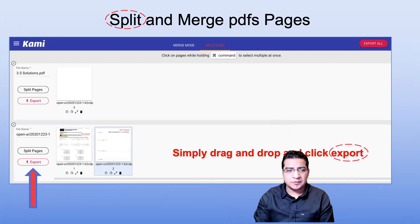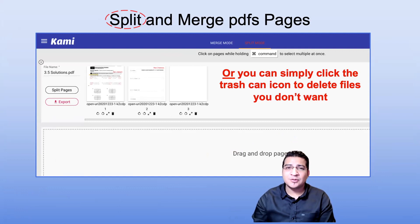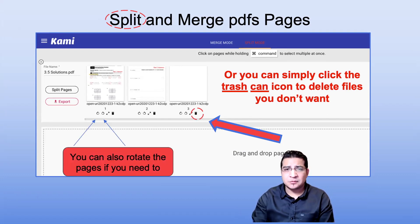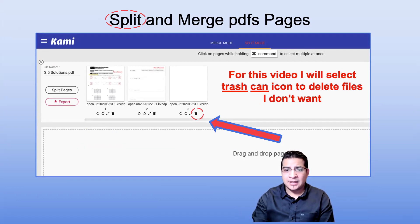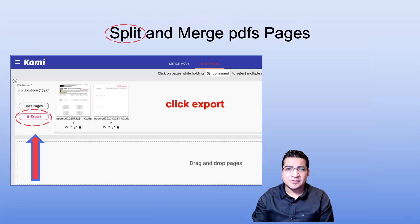Once you're ready to export, you just hit the export button. But in my case, I only have three pages and this is the blank one I inserted by accident that I want to get rid of. So I'm going to go to the little trash can here and just hit delete. You also have the option of rotating the files if you want to. I don't need to rotate them, but I am going to delete the additional page I added. I'm going to select the trash can here and now you see how the file is removed.